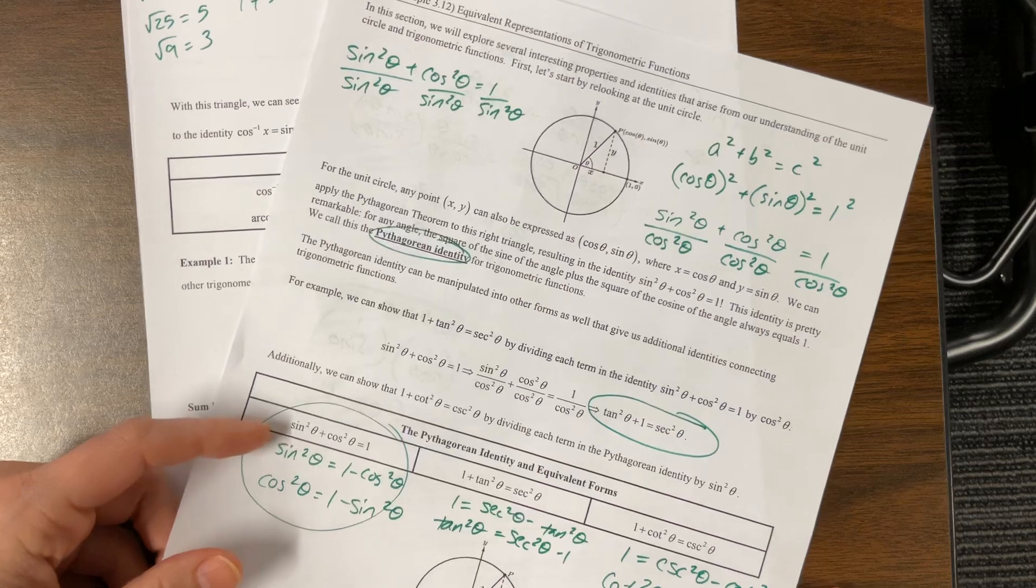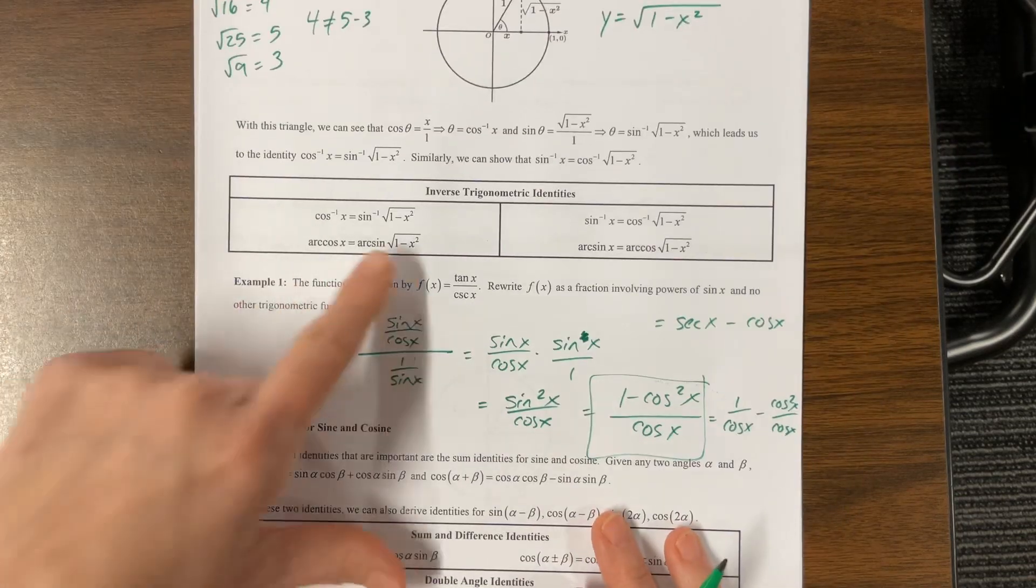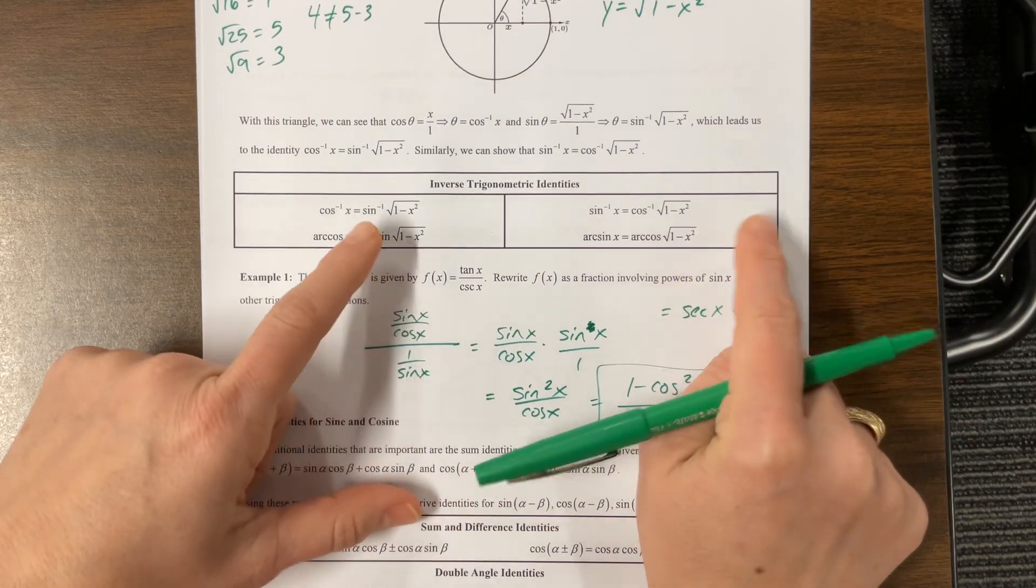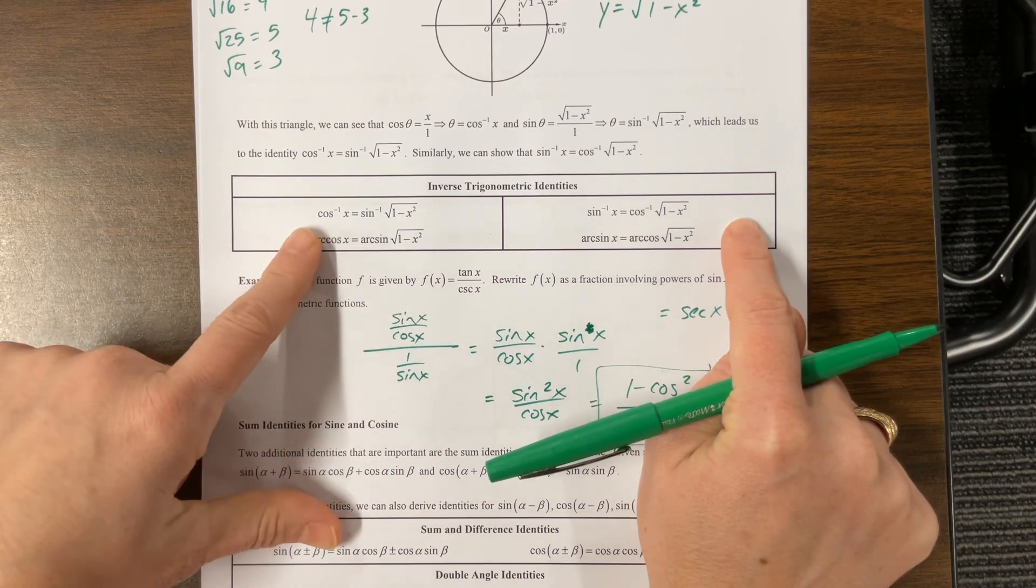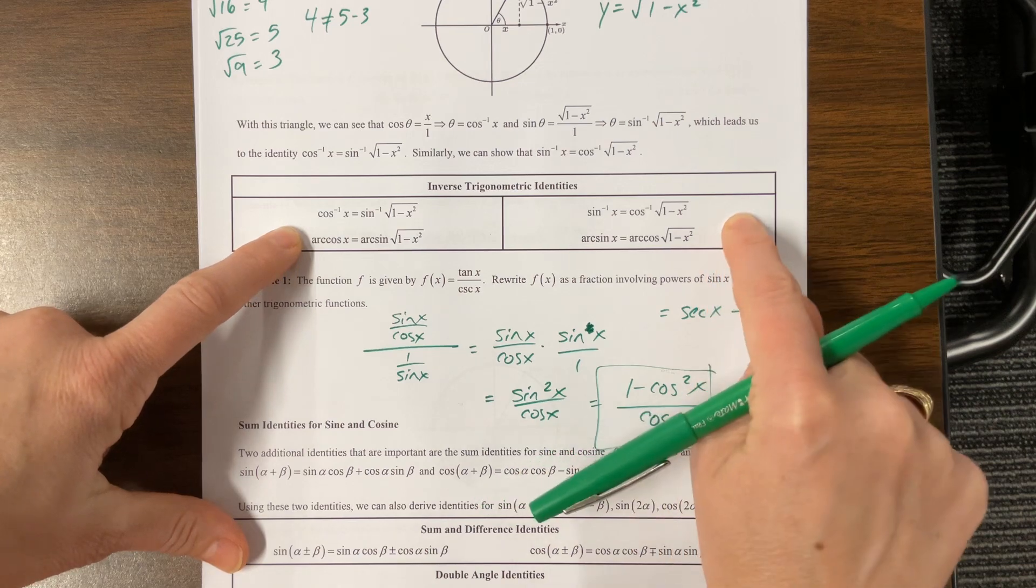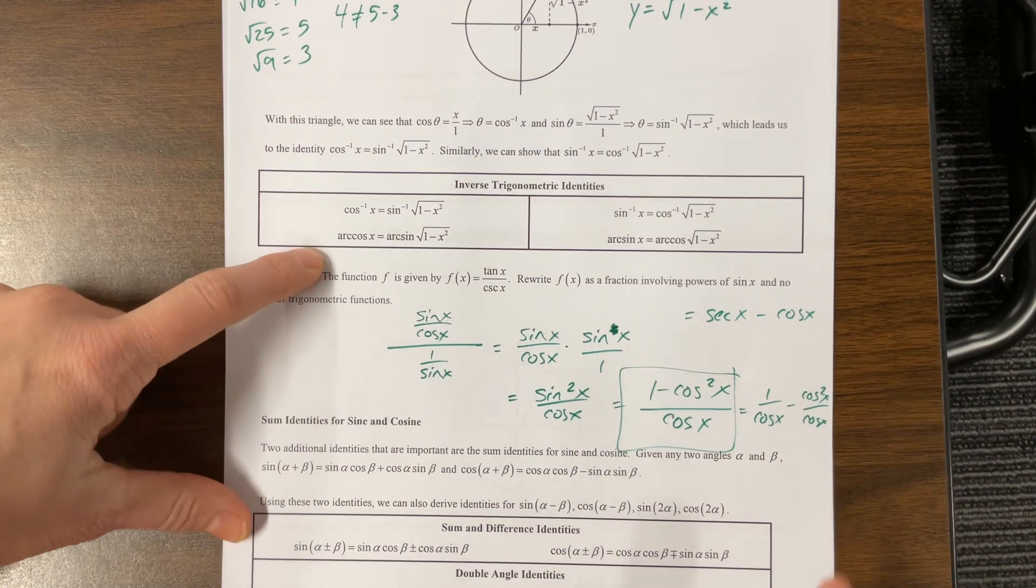So I'm now on to the third video of 3.12. We did the Pythagorean identity, then we manipulated that a little bit to get these inverse trig identities, which I think I have never really taught in pre-calc. I guess I don't know why, but it wasn't really a thing in Texas, or I just skipped it every year.